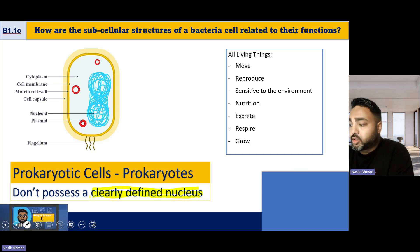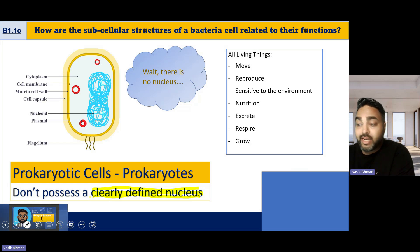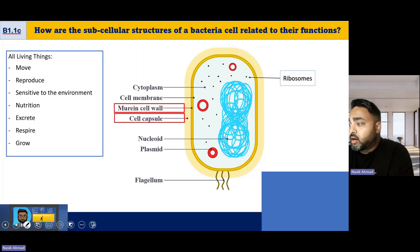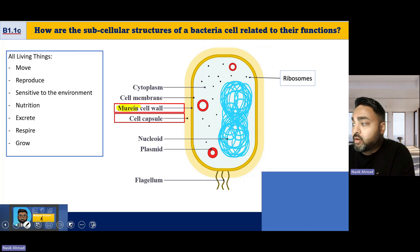Bacterial cells have some slightly different structures. There is no nucleus — there is a nucleoid, which is just a bundle of DNA or genetic material. The cell wall is made from murine, not cellulose like in plant cells. There is also a cell capsule — a kind of slime capsule that covers the outside of a bacterial cell. Part of the reason we use hand wash is because it breaks down the cell wall and the slime capsule of bacterial cells, which bursts the cell open.